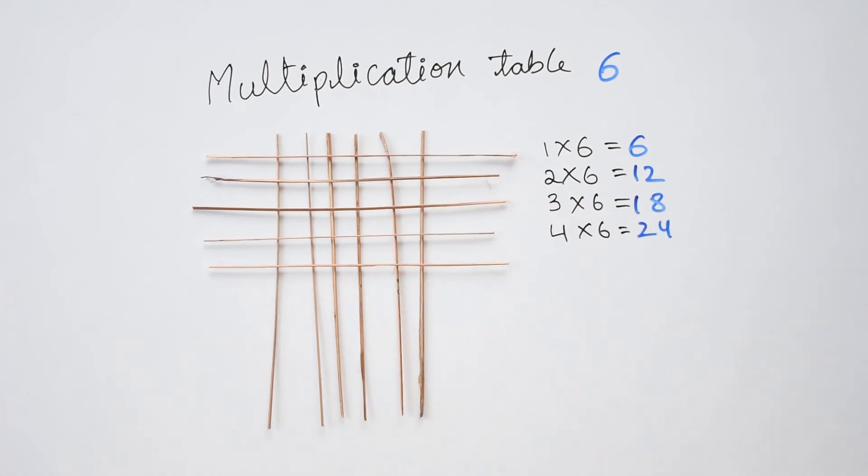Next, 5 times 6 equals to 24 till here. Going ahead, 25, 26, 27, 28, 29, 30.